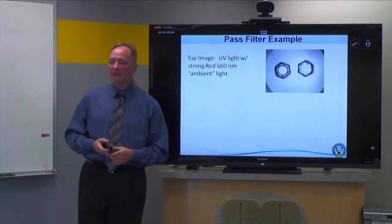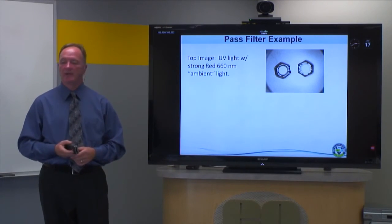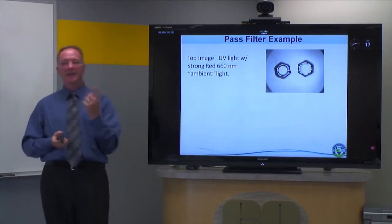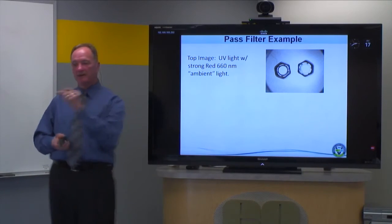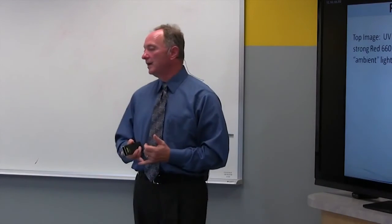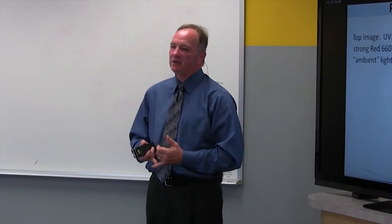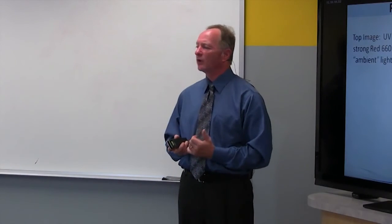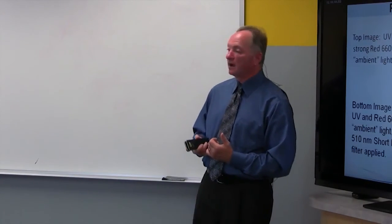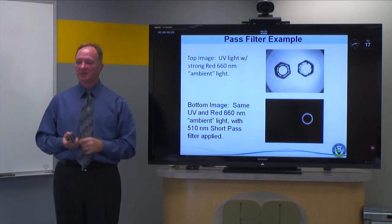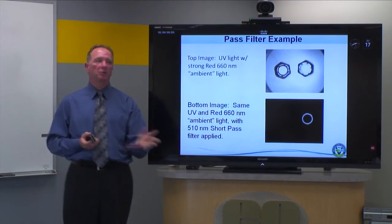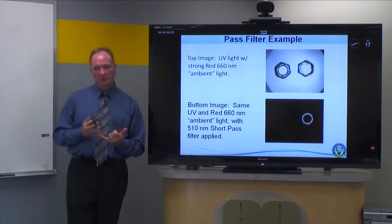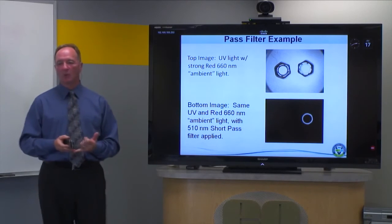Here's an example: two nyloc nuts — one has nylon in it, the other doesn't. UV light is very good at fluorescing nylons. I used a red light as a simulated ambient light, and as a result the contrast between the two nuts is not great. All I did was put a short pass filter in — a better choice would have been something that passed exactly the emission wavelength off the nylon, usually a purple around 420 or 440 nm. But even so, you can clearly see the difference in contrast. This is a much more sample-appropriate technique for getting the most out of what you have.